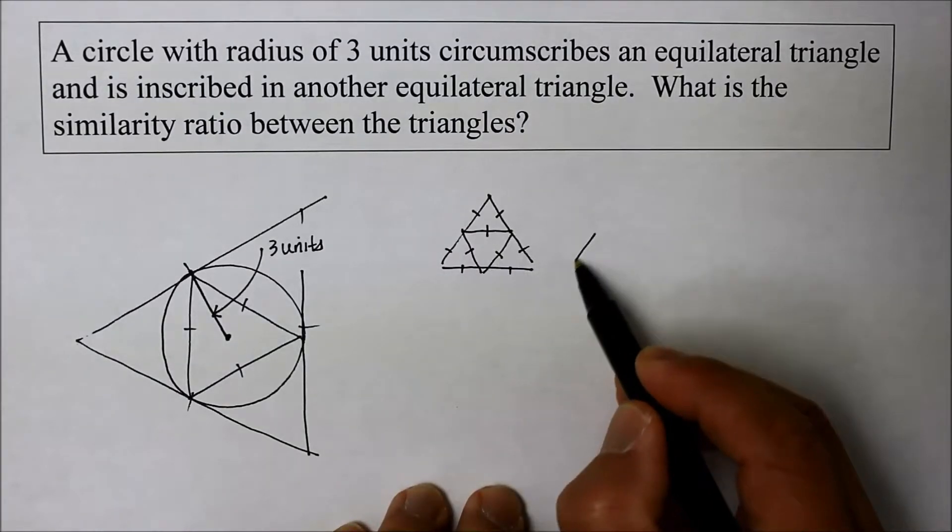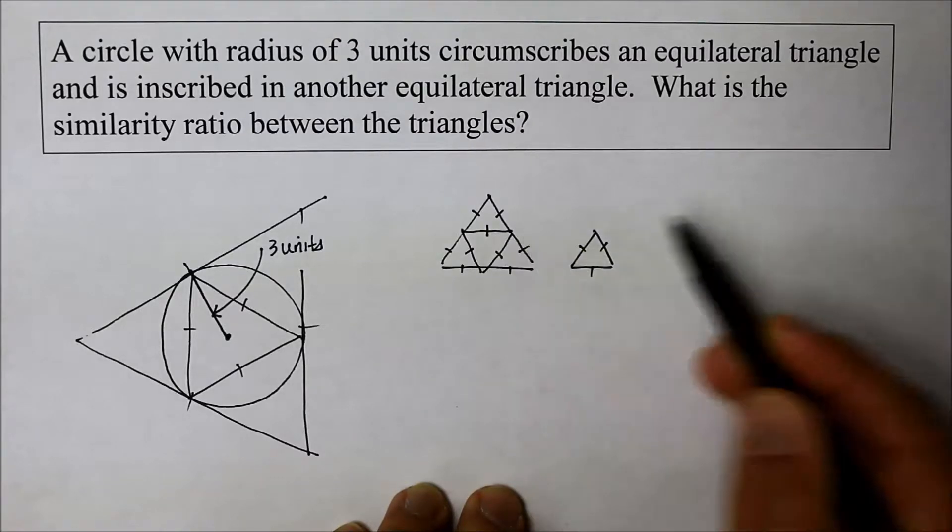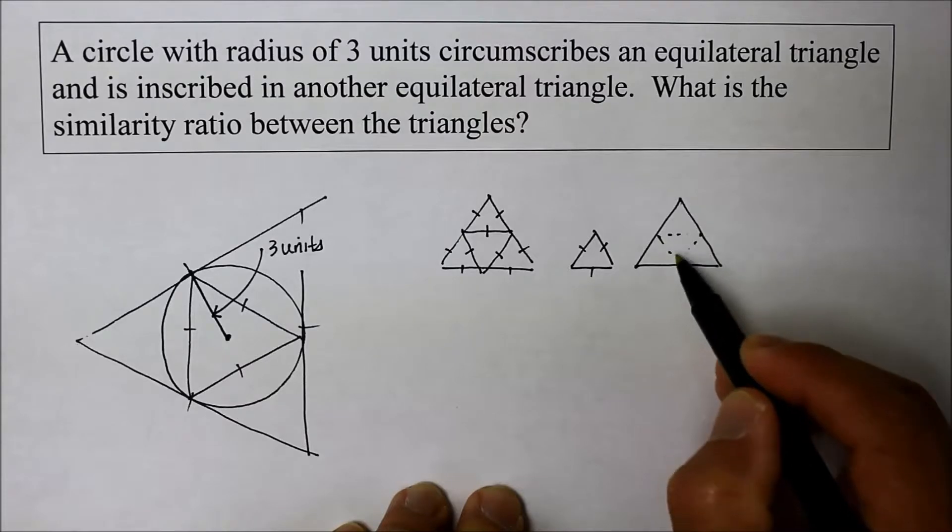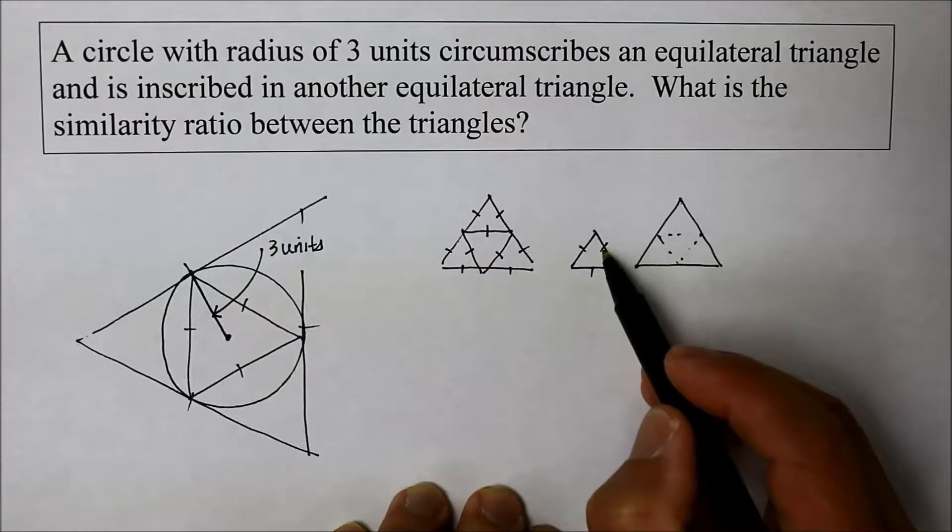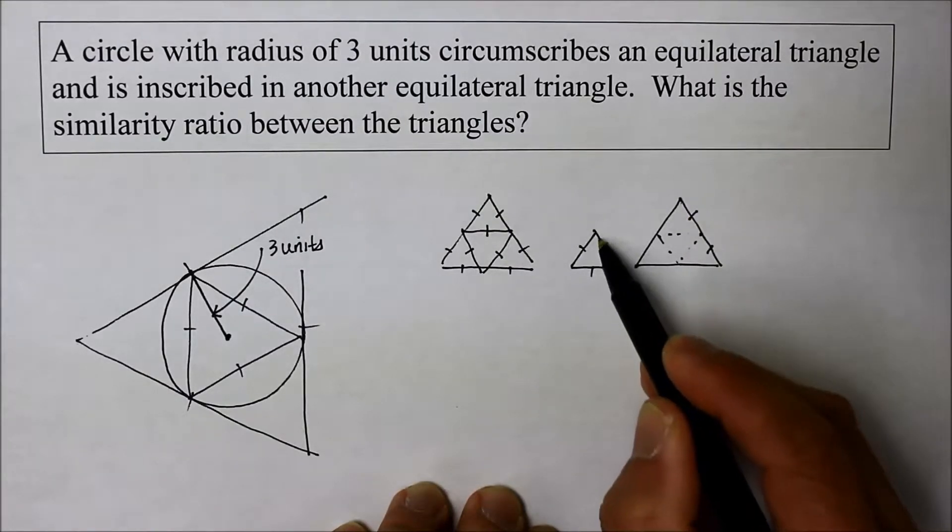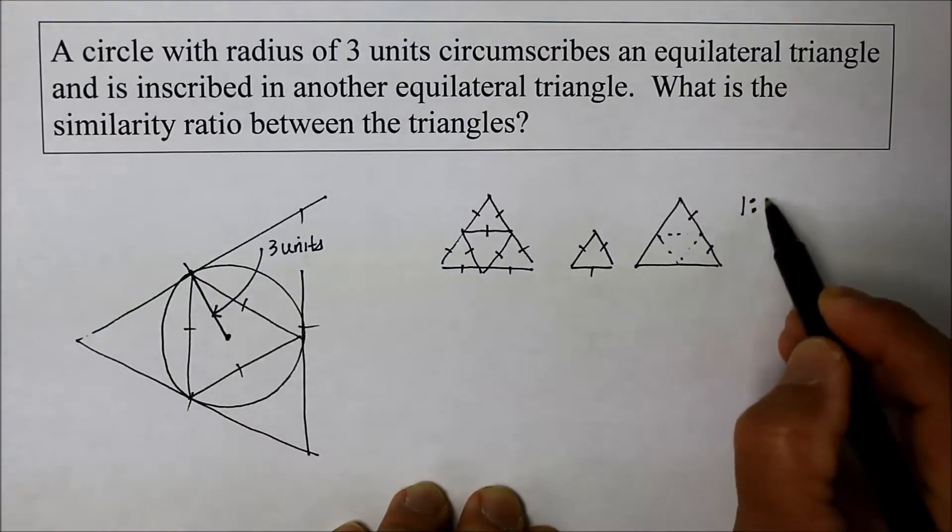Here's a small triangle with three congruent sides. And here's a bigger one, where it used to be in here. So what is the ratio between this one side compared to this long side? For every one, there's two. So the ratio is one to two.